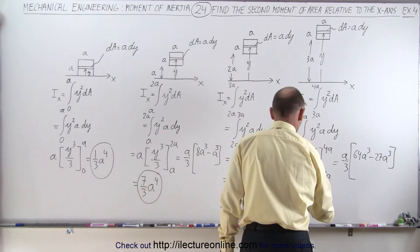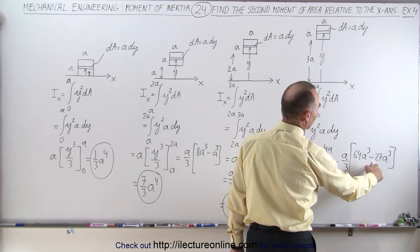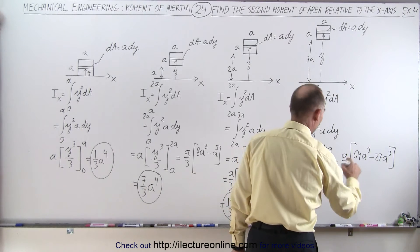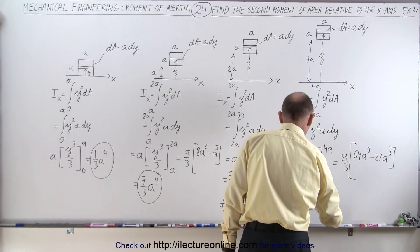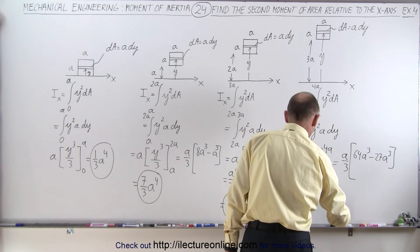And so this is equal to 64 minus 27, that's 37, over 3a to the fourth power.